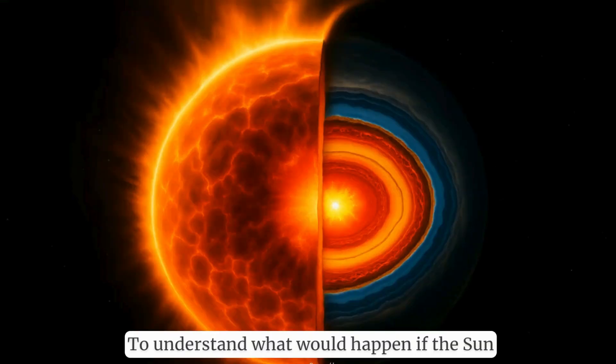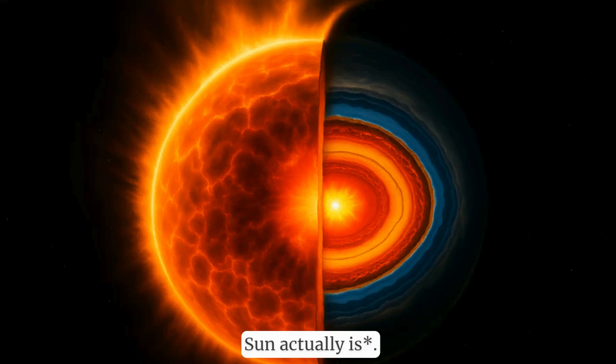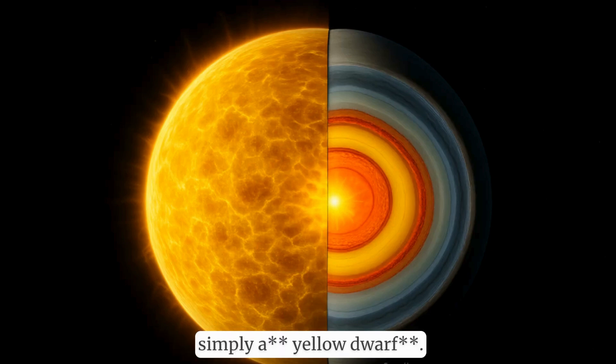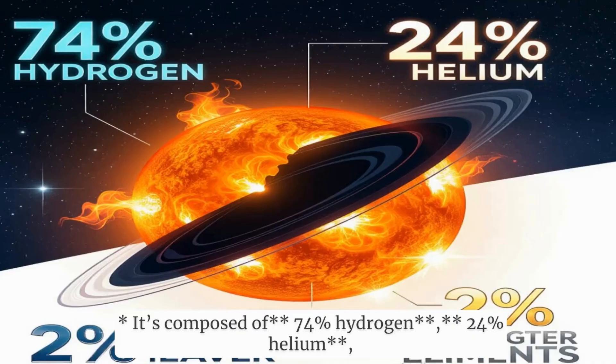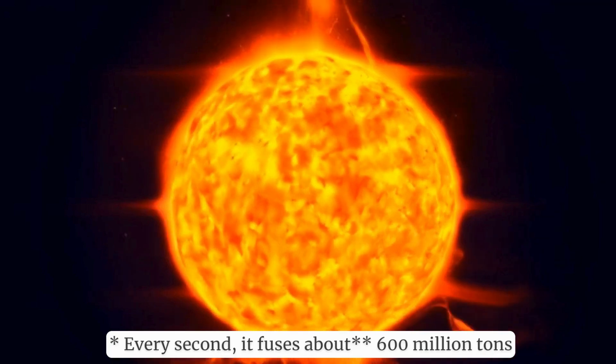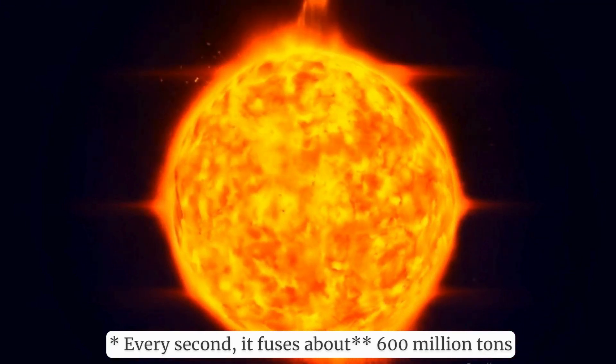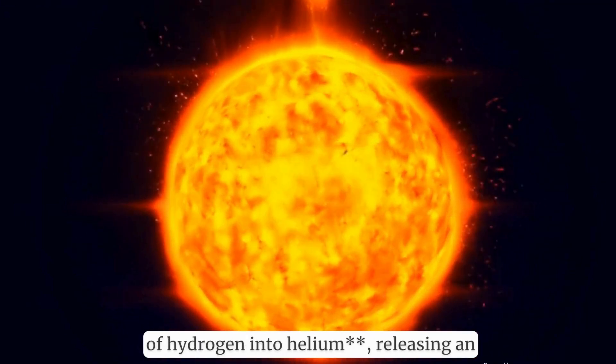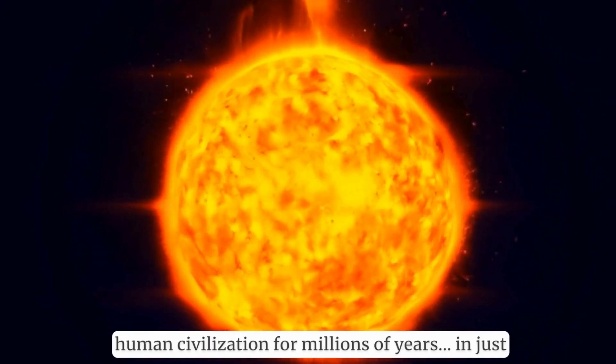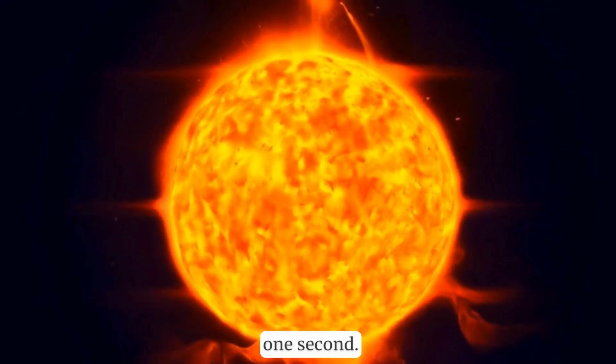To understand what would happen if the Sun exploded, we first need to understand what the Sun actually is. The Sun is a G-type main sequence star, or simply a yellow dwarf. It's composed of 74% hydrogen, 24% helium, and a sprinkling of heavier elements. Every second, it fuses about 600 million tons of hydrogen into helium, releasing an unimaginable amount of energy, enough to power human civilization for millions of years in just one second.